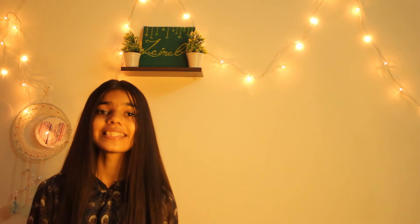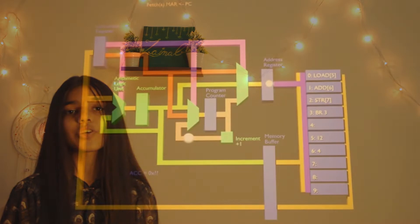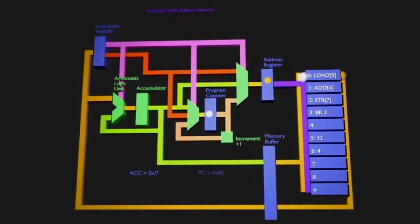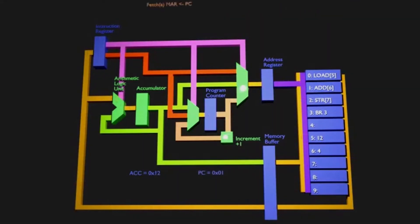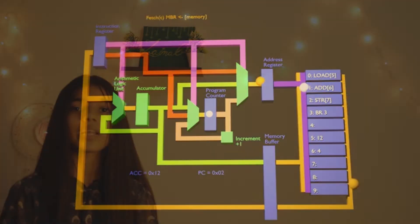To carry out a set of instructions, the CPU first fetches data and instructions from memory and stores them in suitable registers. Both the address bus and data bus are used in this process. Once this is done, each instruction needs to be decoded before finally being executed. This is known as the Fetch-Decode-Execute Cycle.